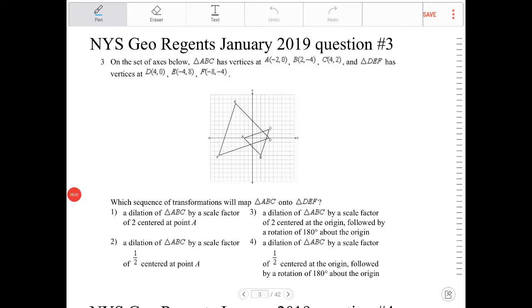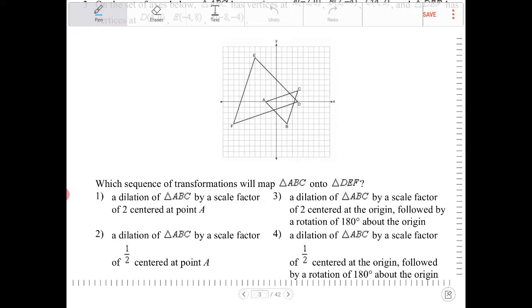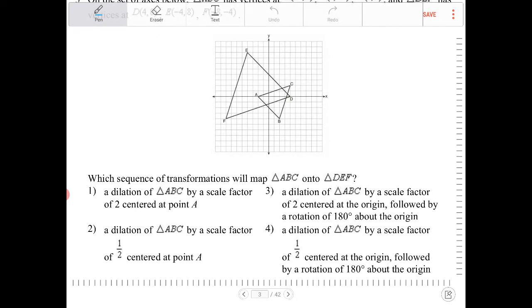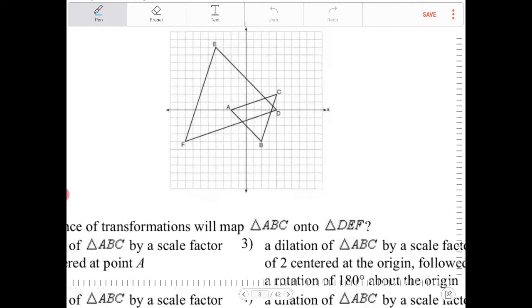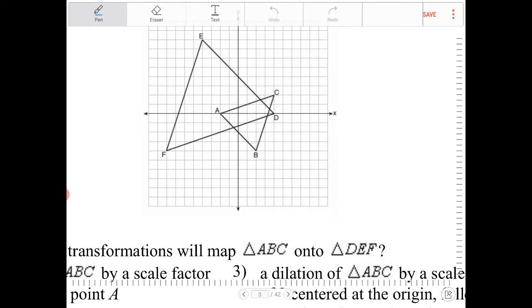On a set of axes below, triangle ABC has vertices A, B, and C as denoted there, and triangle DEF has vertices denoted by that. Which sequence of transformations will map ABC onto DEF? ABC onto DEF.